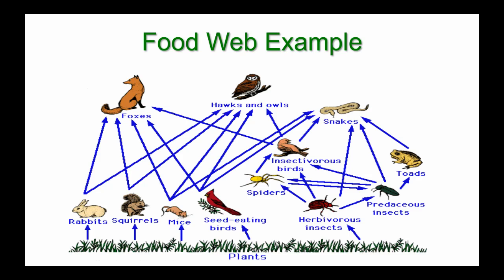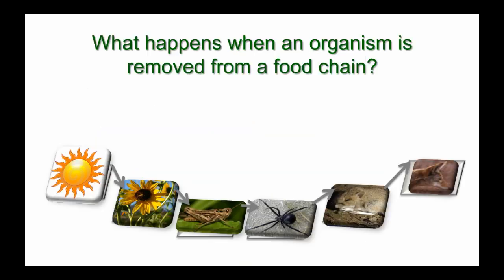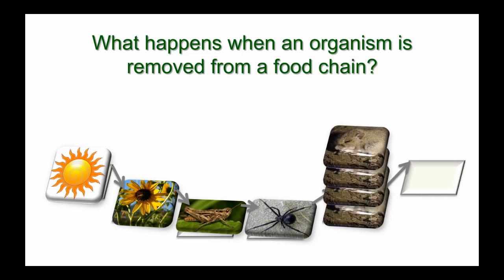We're going to use our very simple food chain and show what would happen if we removed one of these organisms. Let's remove the coyote. The mouse would reproduce and, since it doesn't have the coyote to eat it and keep its population down, we're going to get an overabundance of mice.